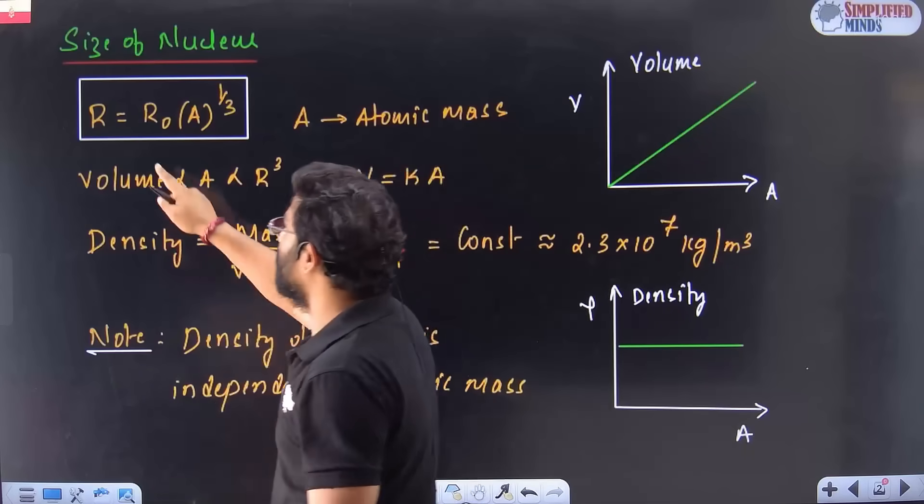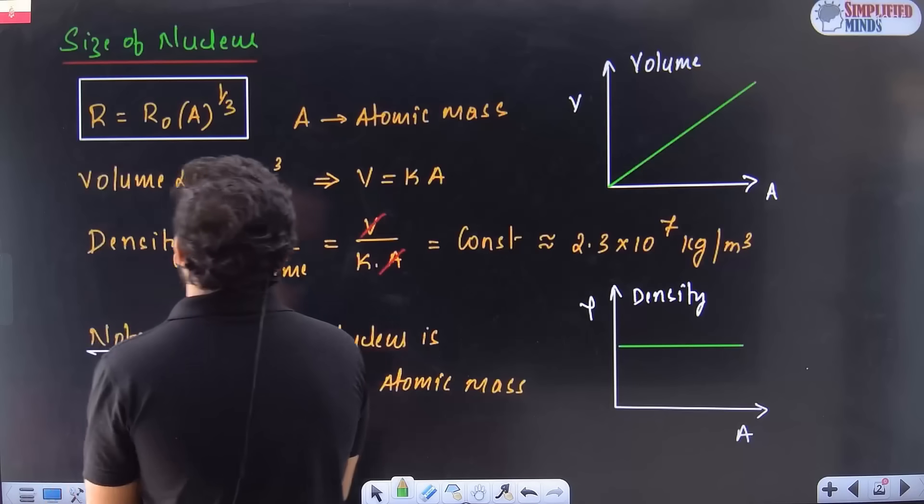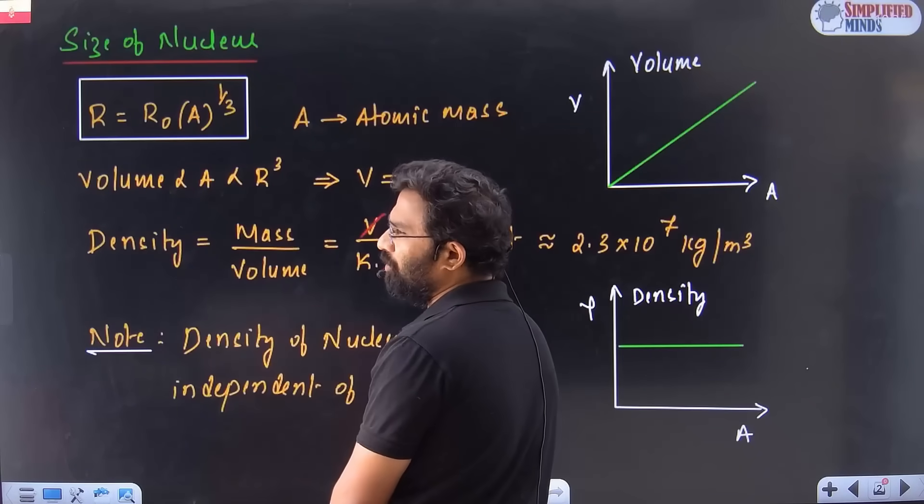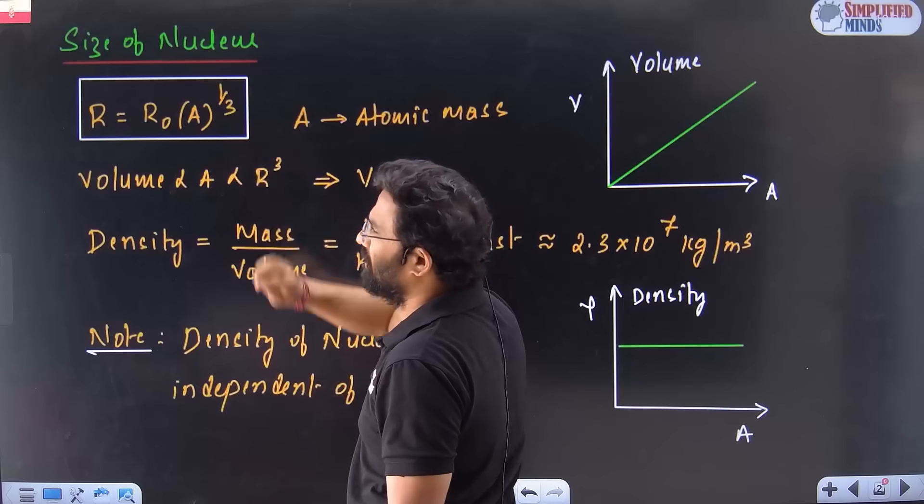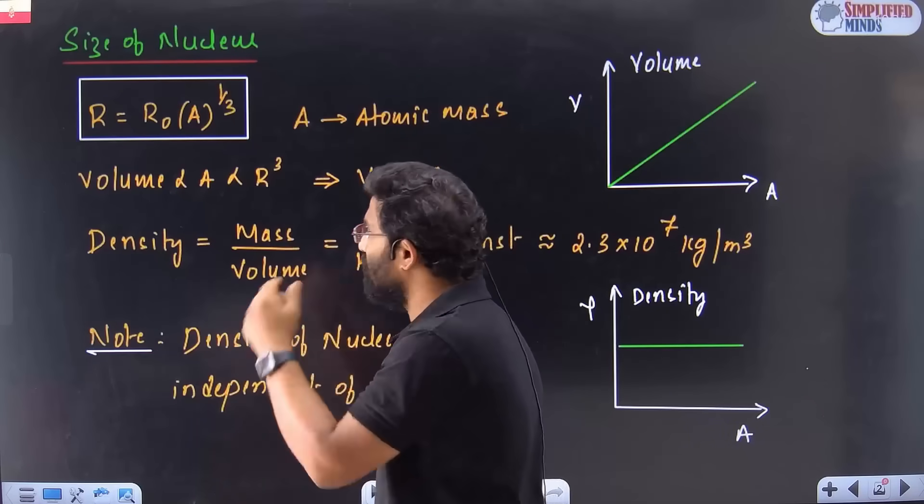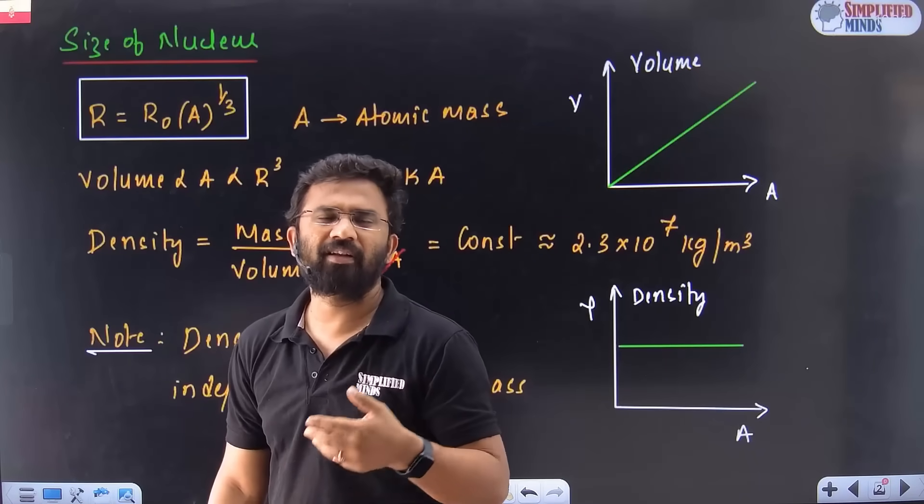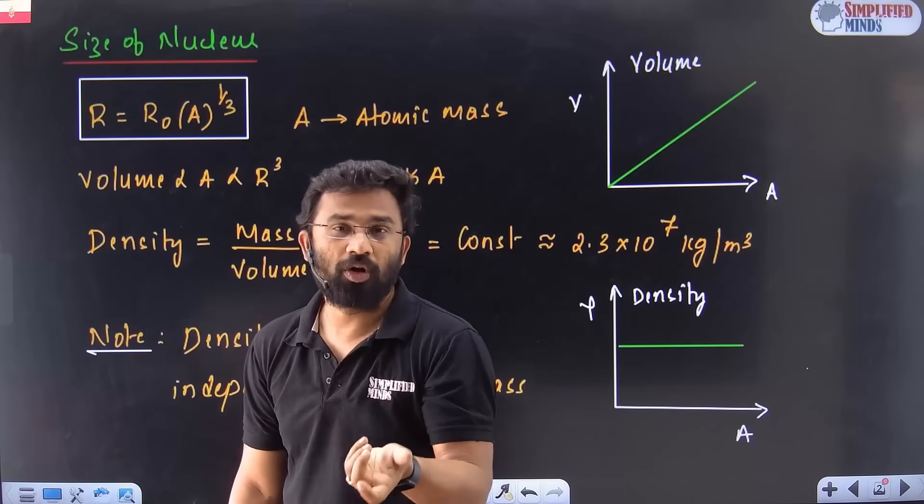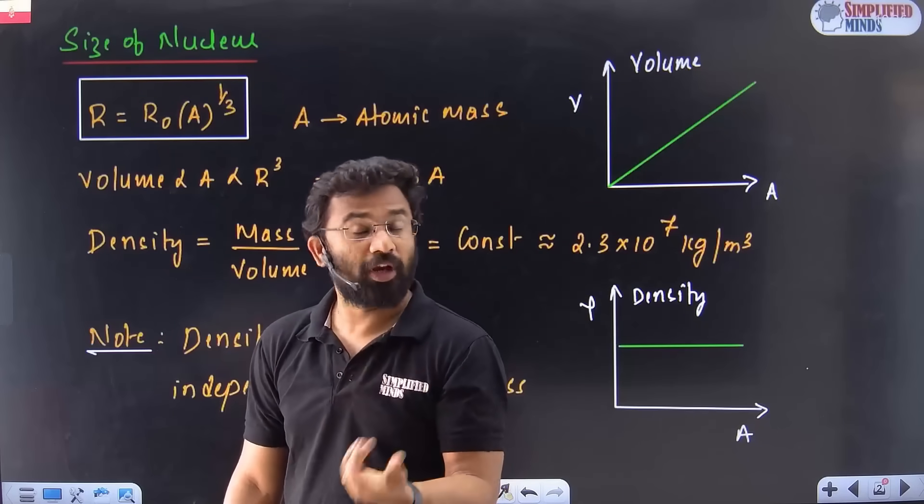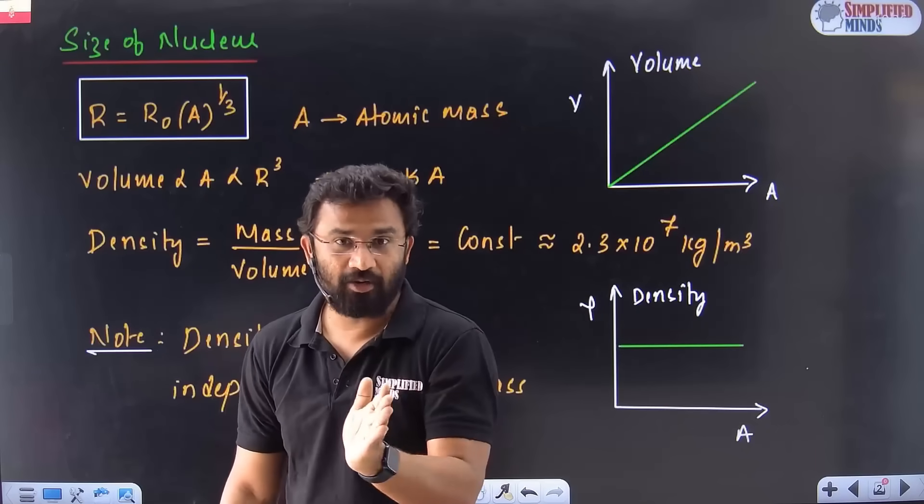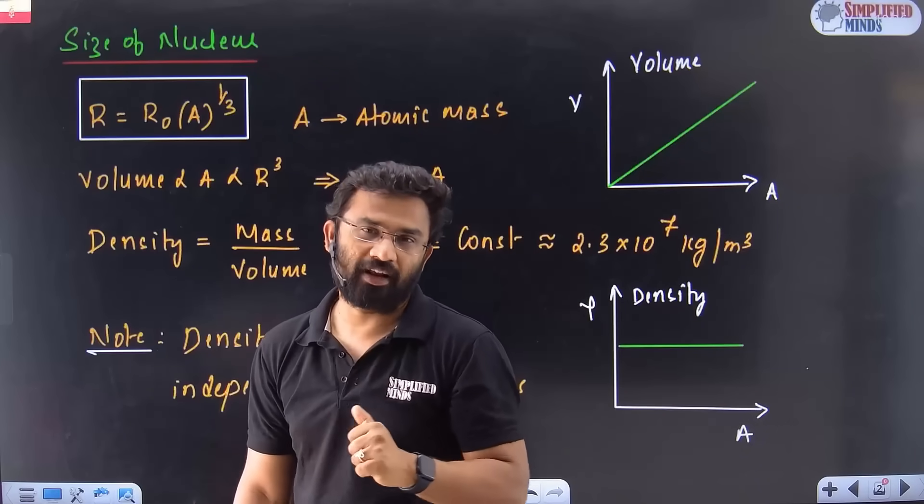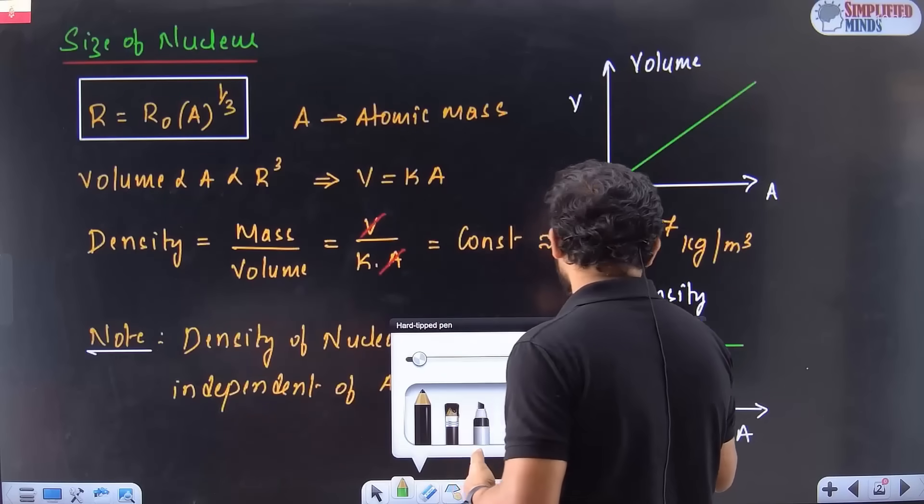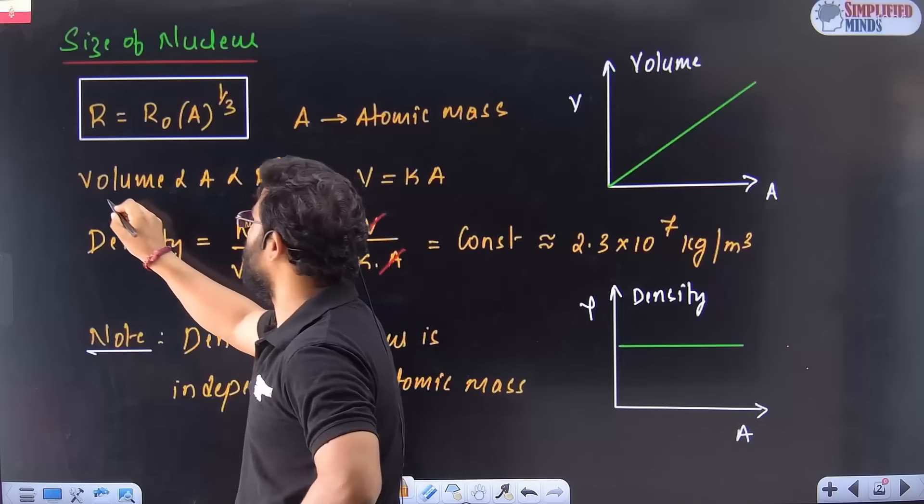So what is size of the nucleus? The formula is given by R is equal to R₀ into A to the power of 1 by 3. And A is the atomic mass. So you can see how it's related. Radius is equal to R₀ into A to the power of 1 by 3, atomic mass to the power 1 by 3. Usually examiners will try to give two atomic masses like different, like 27 and then in the ratio. They ask you to find the ratio, ratio of the radii, ratio of the mass. It's very common in CET.